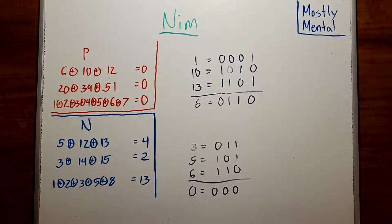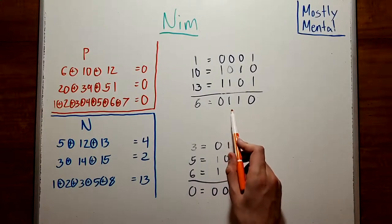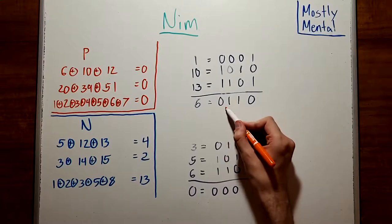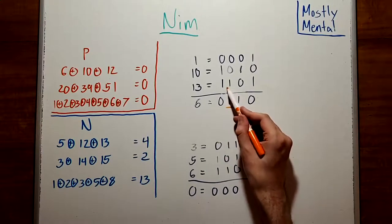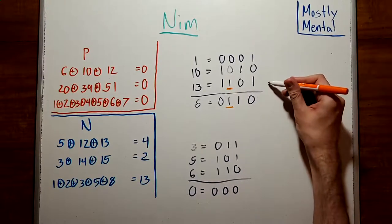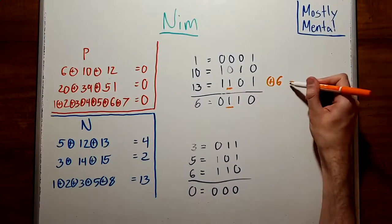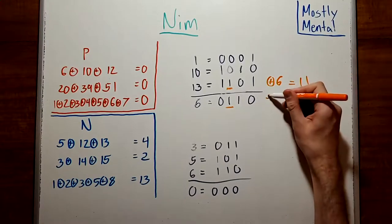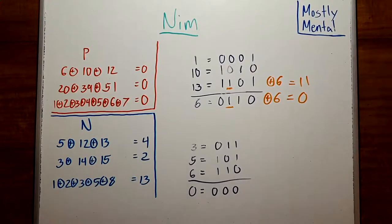Notice that if the sum is non-zero, as it is here, then there must be at least one bit in the total that's a one. Choosing the first one, there must be a pile with a one in that same position. If we add the total to that pile, it turns out the pile becomes smaller, and the total becomes zero. That's not too hard to prove, so I'll leave it as an exercise.